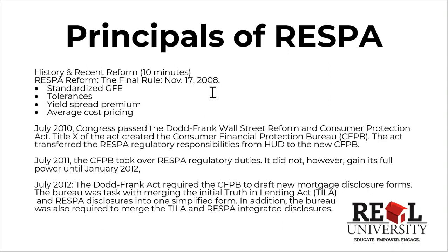In 2010, Congress passed the Dodd-Frank Wall Street Reform and Consumer Protection Act, which created what we call the CFPB. The CFPB took over RESPA — as mentioned earlier, RESPA was a division of HUD. It didn't get its full powers until 2012, and that was directed by President Barack Obama.